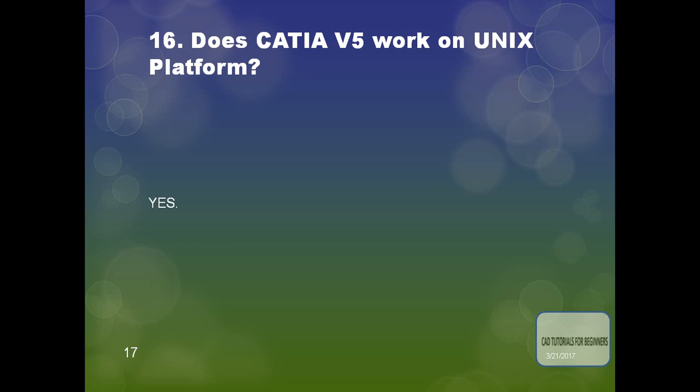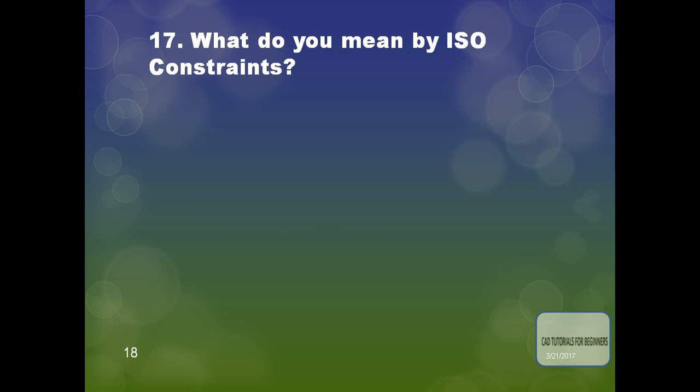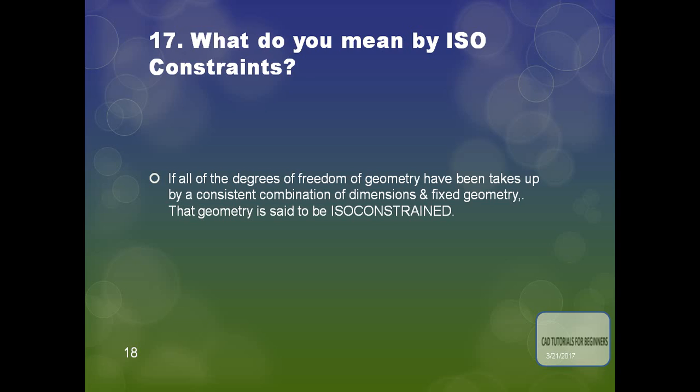What do you mean by ISO constraint? If all the degrees of freedom of a geometry have been fixed by a consistent combination of dimensions and fixed geometry, then the geometry is said to be ISO constrained — that is, all the degrees of freedom of the sketch are locked. If degrees of freedom remain, it is under-constrained, and if the dimensions exceed the degrees of freedom, the sketch becomes over-constrained.